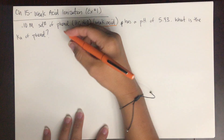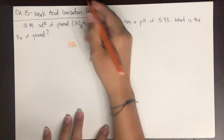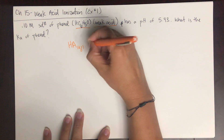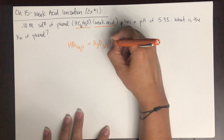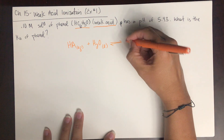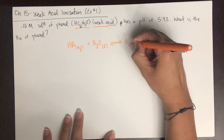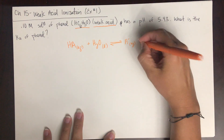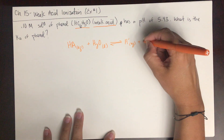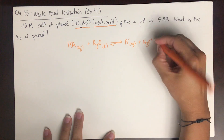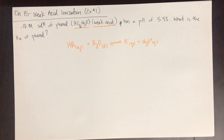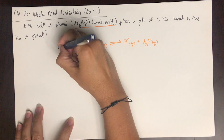The generic weak acid ionization is: HA (aqueous) plus water (liquid) is in equilibrium with A⁻, which would be the phenolate ion, plus H₃O⁺, the conjugate acid of water, because water is acting like a base. This is the R row in my equilibrium table.